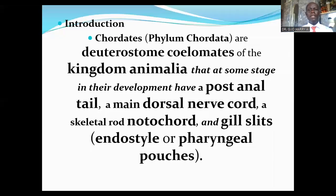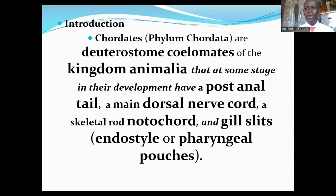Chordates are basically the deuterostome coelomates of the kingdom Animalia that at some stage in their development have a post-anal tail, a dorsal hollow nerve cord, a skeletal notochord, or gill slits. The gill slits are also referred to as endostyle or pharyngeal pouches. Chordates are referred to as deuterostomes — organisms which, in their embryonic development, form the anus before the mouth.